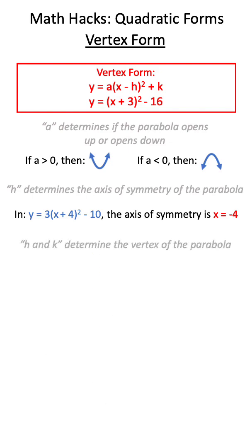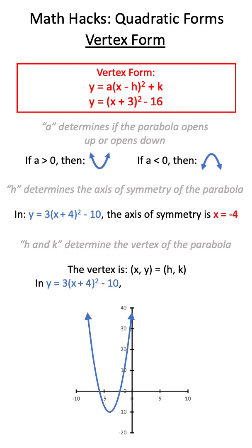Finally, we can use h and k in vertex form to actually give us the vertex of our parabola. Again, we have to change the sign of h, but what we can see in an equation like this is that the vertex would be negative 4, negative 10.